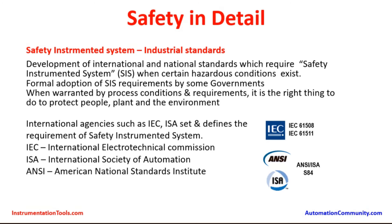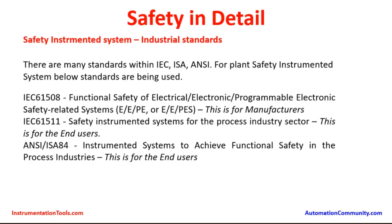International agencies such as IEC and ISA set and define the requirements of safety instrumented systems. IEC stands for International Electro-Technical Commission, ISA stands for International Society of Automation, and ANSI stands for American National Standards Institute. There are different standards within IEC, ISA, and ANSI for safety instrumented systems. One is IEC 61508, which covers functional safety of electrical, electronic, and programmable electronic safety-related systems — also known as E/E/PE or E/E/PES. This standard is used primarily by manufacturers producing electronic equipment, sensors, final control elements, and logic solvers.